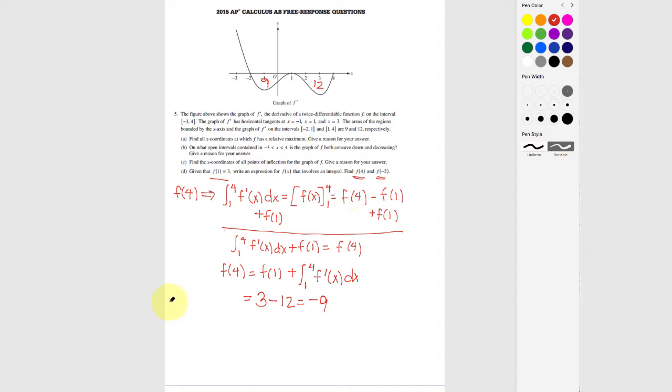Now the next thing they ask us to do is f of negative 2. So I'm going to apply that same type of logic, except now I'm going to use the integral. And since I go small number to big number, I'm going to go from negative 2 to 1.